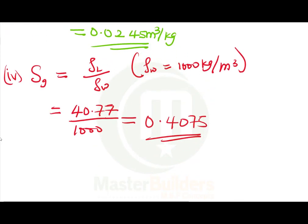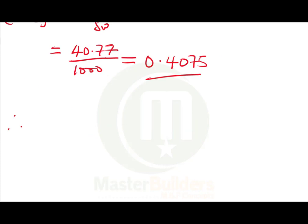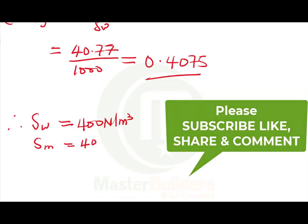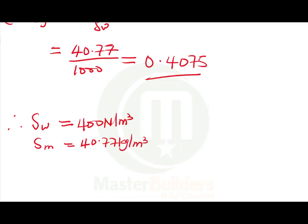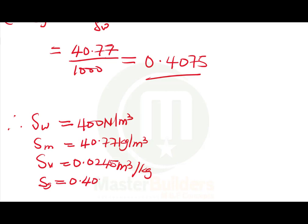To summarize: specific weight = 4,000 N/m³; specific mass = 40.77 kg/m³; specific volume = 0.0245 m³/kg; and specific gravity = 0.04077. These are all the required parameters for this question.